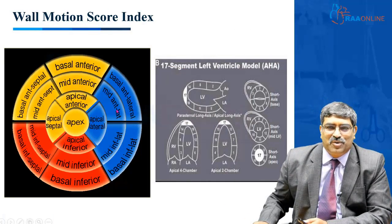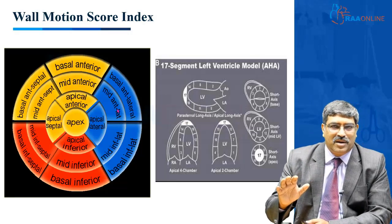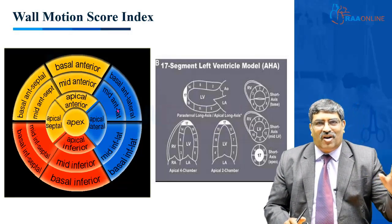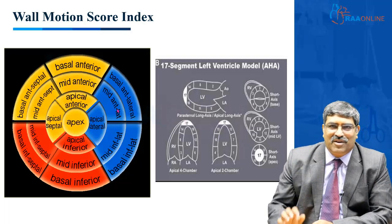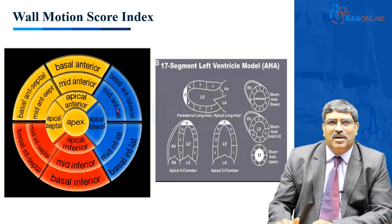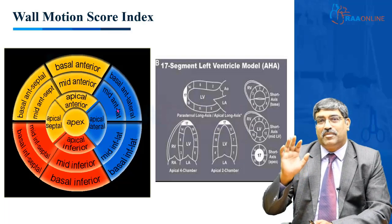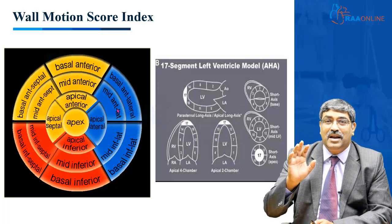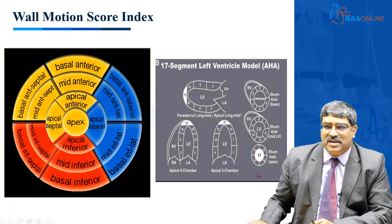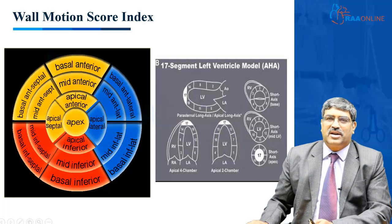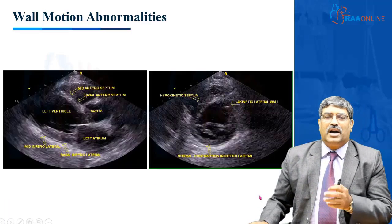As we move from apex to base, we have about 17 segments. As a non-cardiac anesthesiologist, you need not know about all 17 segments, but certain transthoracic echocardiogram views you should really be aware of. The parasternal long axis and apical short axis will give a fair view of the overall function of the heart.